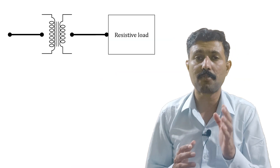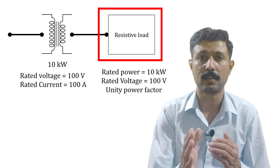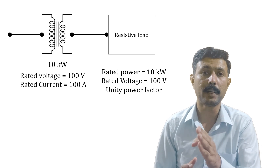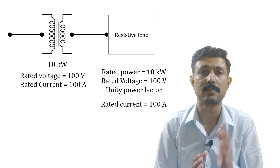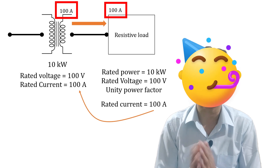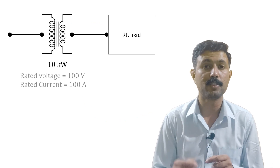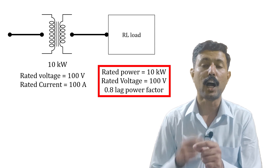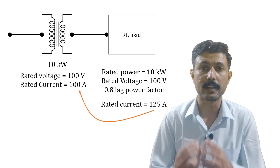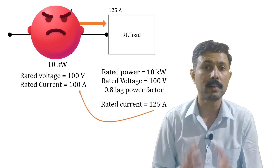Now let's see the disaster that happens if we rate a transformer in kilowatt instead of KVA. Imagine a 10 kilowatt transformer with a rated voltage of 100 V and rated current of 100 A. Connecting a 10 kilowatt resistive load at unity power factor draws exactly 100 A — no problem. But now connect an RL load with a power factor of 0.8. To deliver 10 kilowatt at 100 V and 0.8 power factor, it will draw 125 A of current — but the transformer is rated for only 100 A, so it will burn.